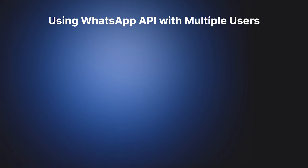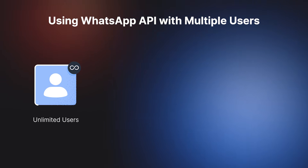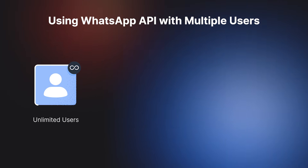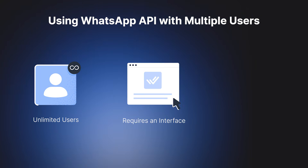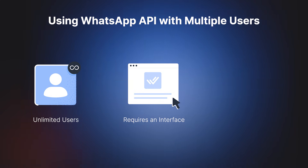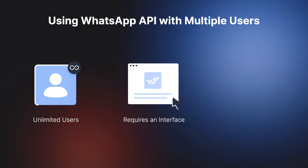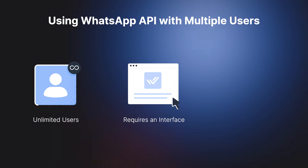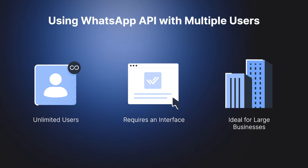Unlike the app, the WhatsApp API is built for scale. You can support an unlimited number of users; however, it doesn't come with its own interface. You'll need to connect it to a conversation management platform to handle messages and calls. And depending on the platform, you can have advanced automation and AI capabilities — perfect for companies that handle marketing, sales, and support over WhatsApp at scale.